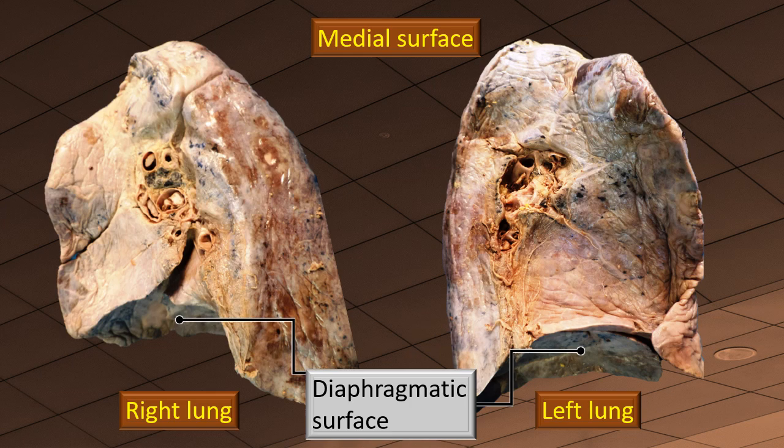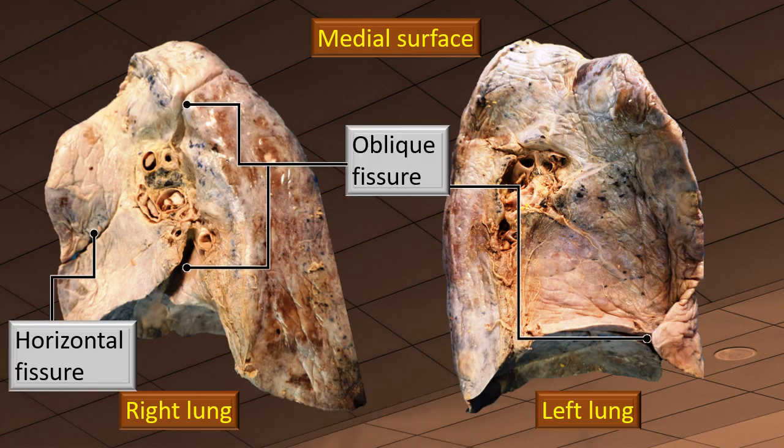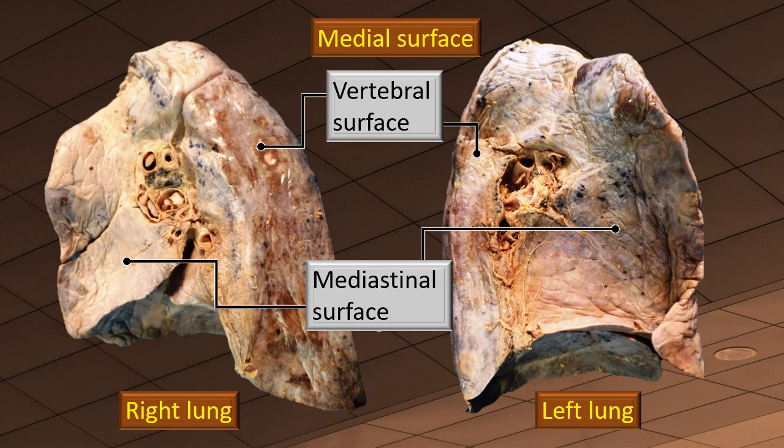Now looking at the medial surface: the lung has a costal surface, a base or diaphragmatic surface — shown in full view in this photograph — and the remaining surface is the medial surface. On the medial side, you can also see the oblique fissure in both the right and left lungs. On the right side, the horizontal fissure also extends onto the medial surface. Therefore, on the right side there are three lobes — superior, middle, and inferior — whereas on the left it is a superior lobe and an inferior lobe.